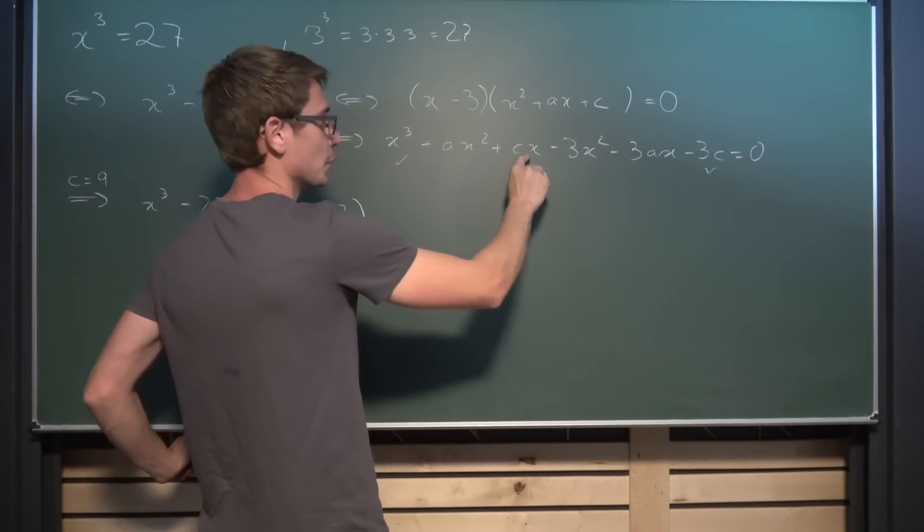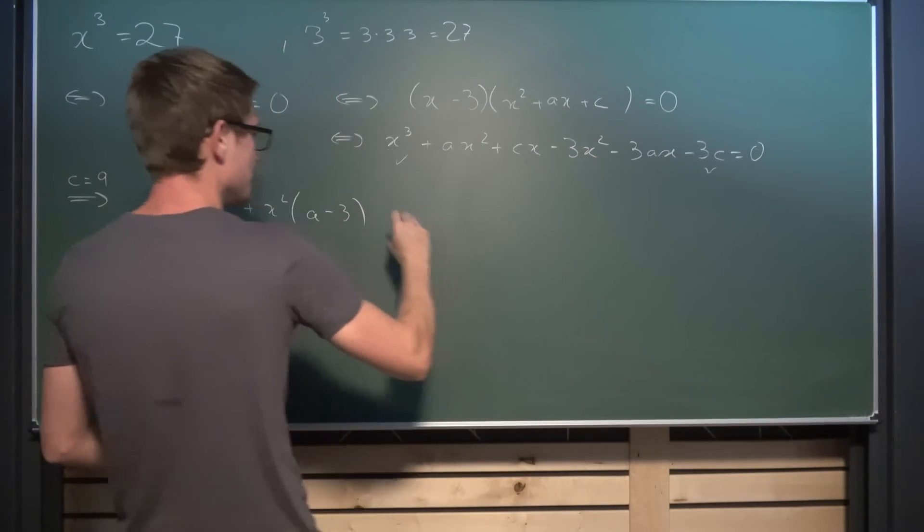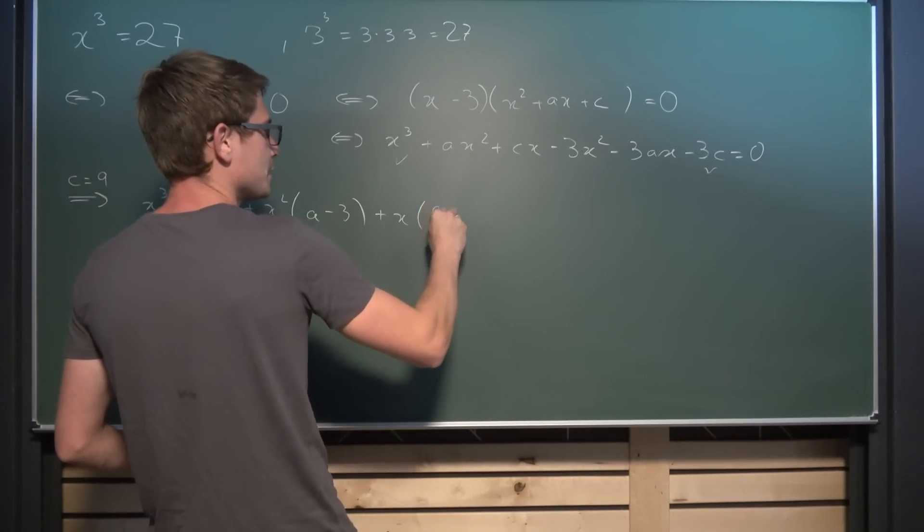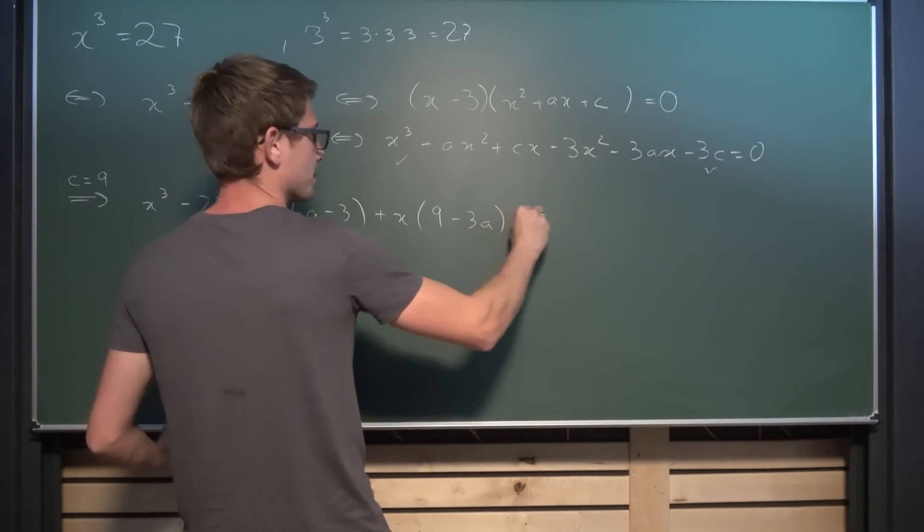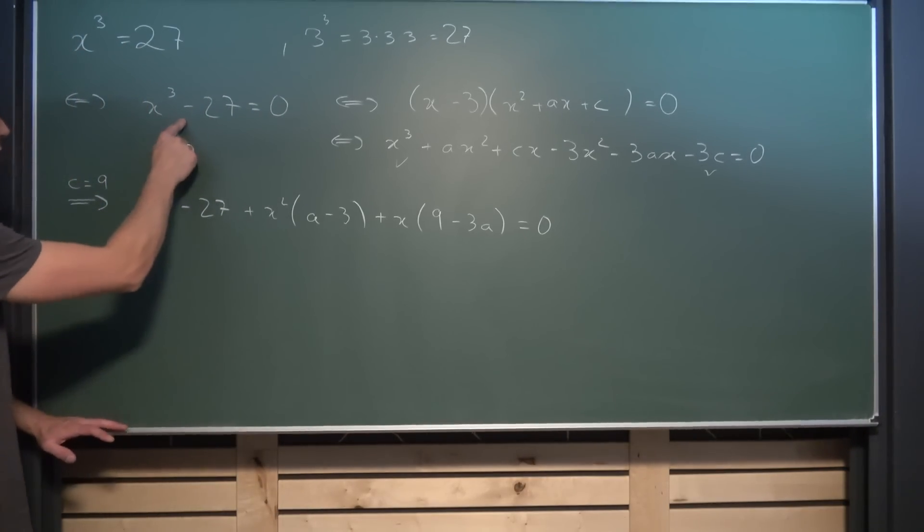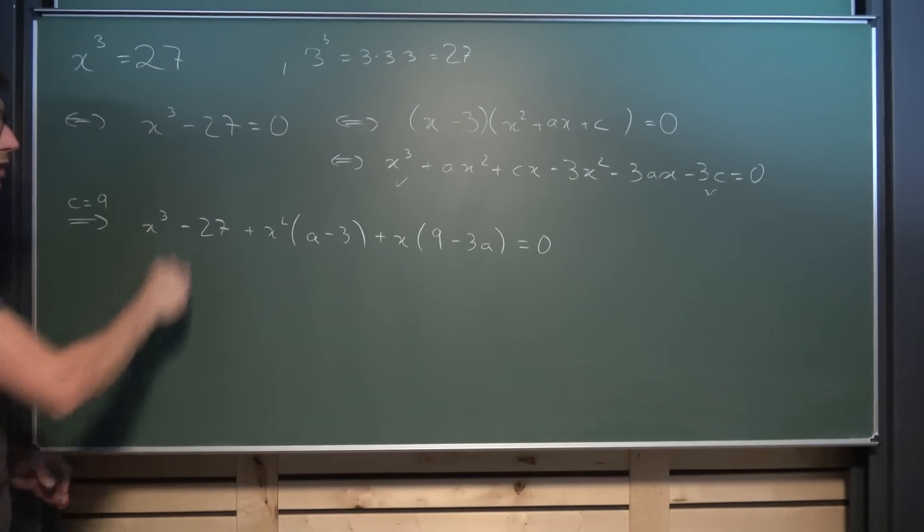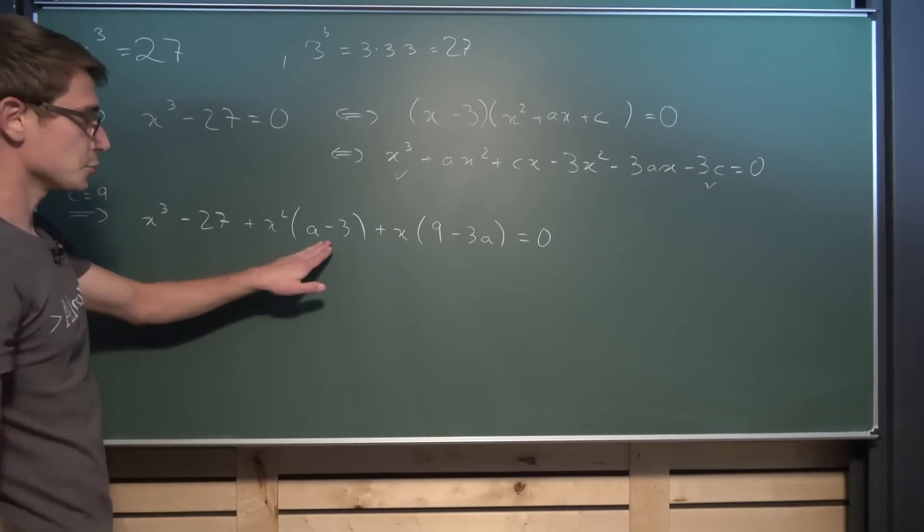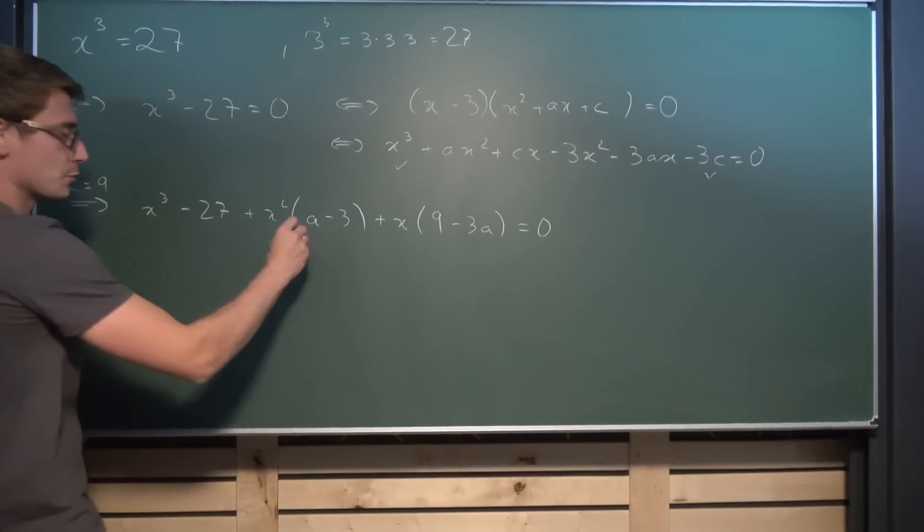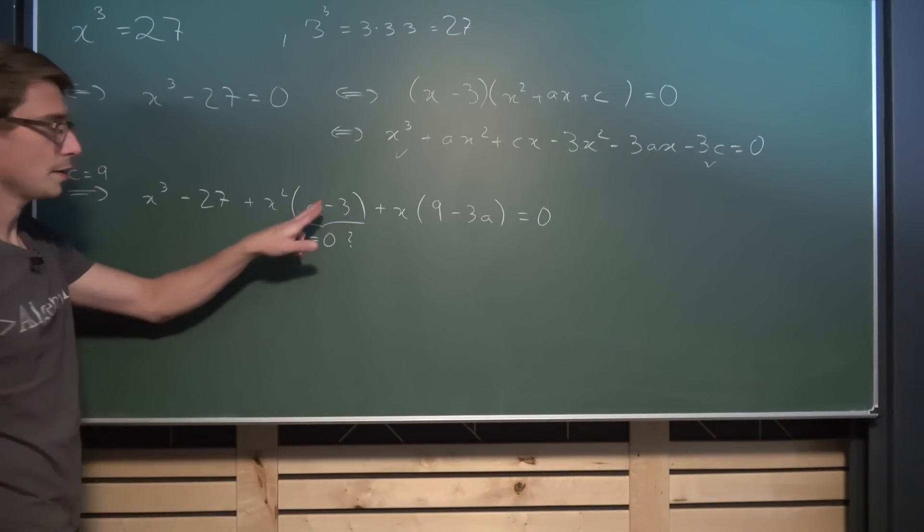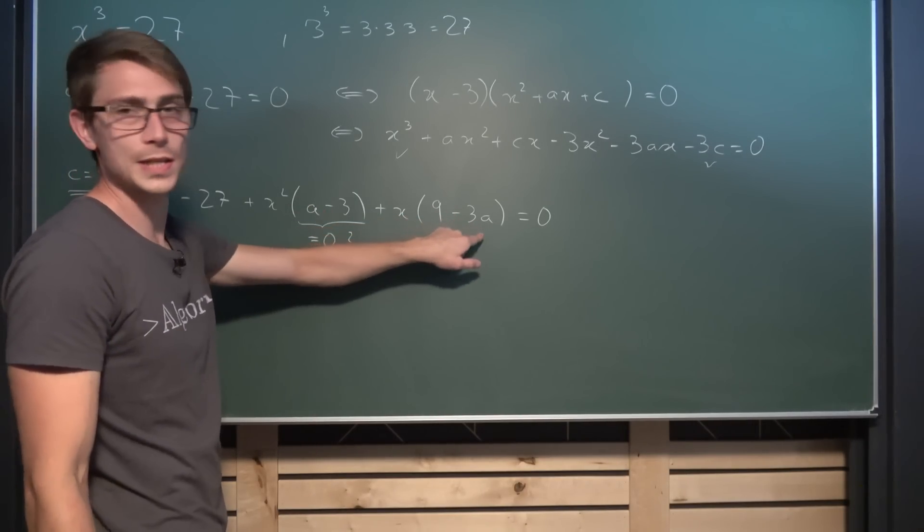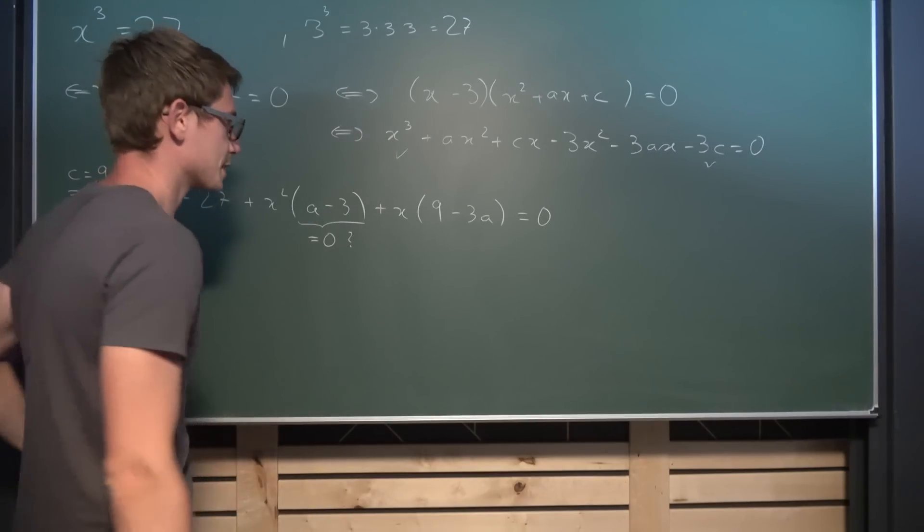We also have a part with x. We know that c is equal to 9, meaning if we were to factor x out we are going to get 9 minus 3 times a, and all of this is equal to zero. Now you might notice that we don't have an x squared and an x either here, meaning those coefficients must be equal to zero. Meaning when is a minus 3 equal to zero? When a is equal to 3. Does this work for this part too? 9 minus 3 times 3 is equal to zero. This works out.